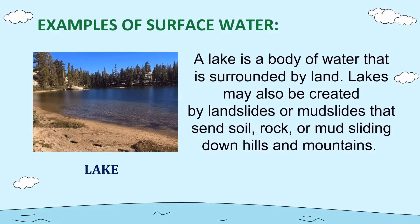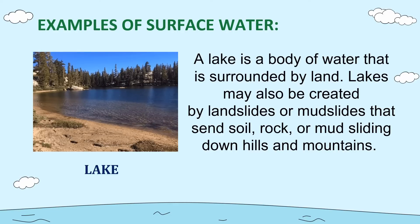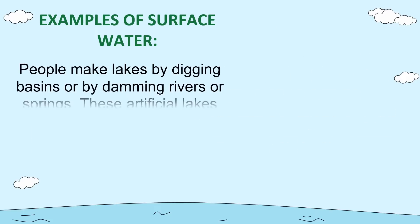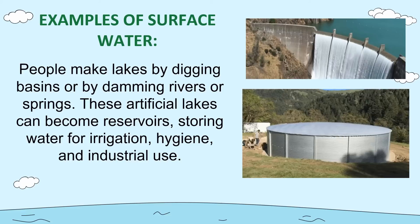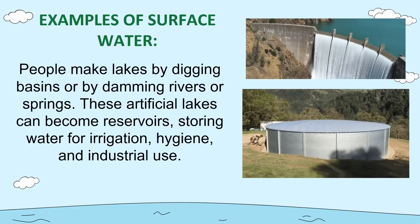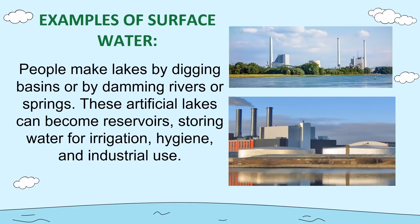An example of surface water is a lake. A lake is a body of water surrounded by land. Lakes may also be created by landslides or mudslides that send soil, rock, or mud sliding down hills and mountains. People also make lakes by digging basins or by damming rivers or springs. These artificial lakes can become reservoirs, storing water for irrigation, hygiene, and industrial use.